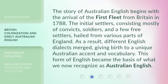The story of Australian English begins with the arrival of the First Fleet from Britain in 1788. The initial settlers, consisting mostly of convicts, soldiers, and a few free settlers, hailed from various parts of England. As a result, different English dialects merged, giving birth to a unique Australian accent and vocabulary. This form of English became the basis of what we now recognize as Australian English.